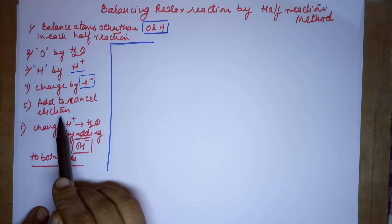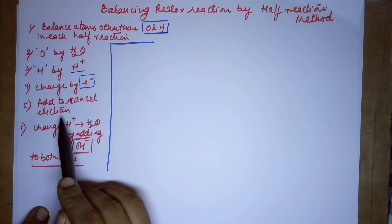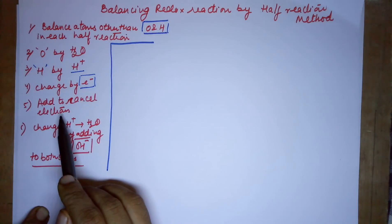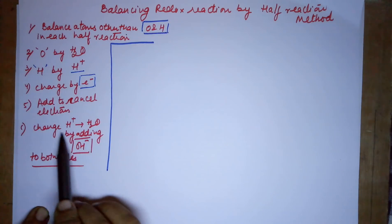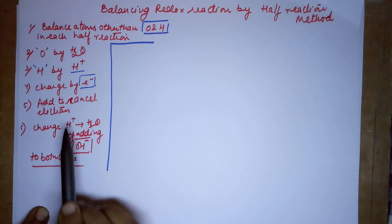When adding two reactions so that electrons cancel, the electrons of the two reactions should be on opposite sides. If the first reaction has electrons on the reactant side, then the second half reaction should have electrons on the product side. Finally, if you are asked for basic medium balancing, you will need to convert H⁺ ions in your final net reaction.